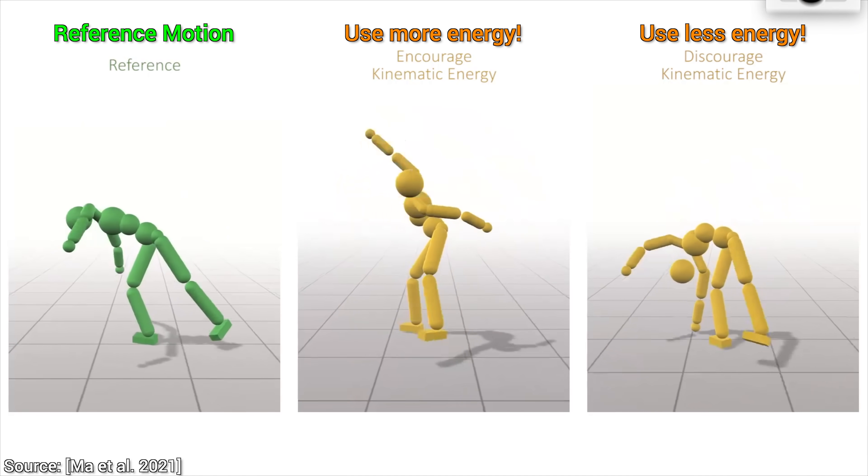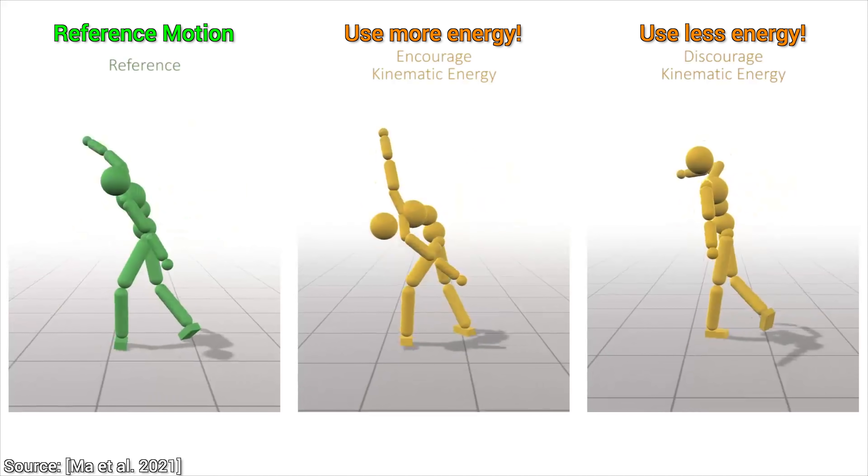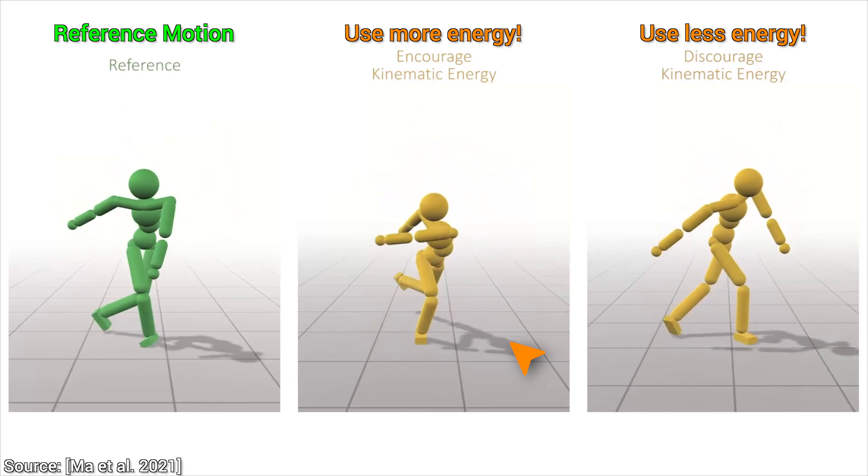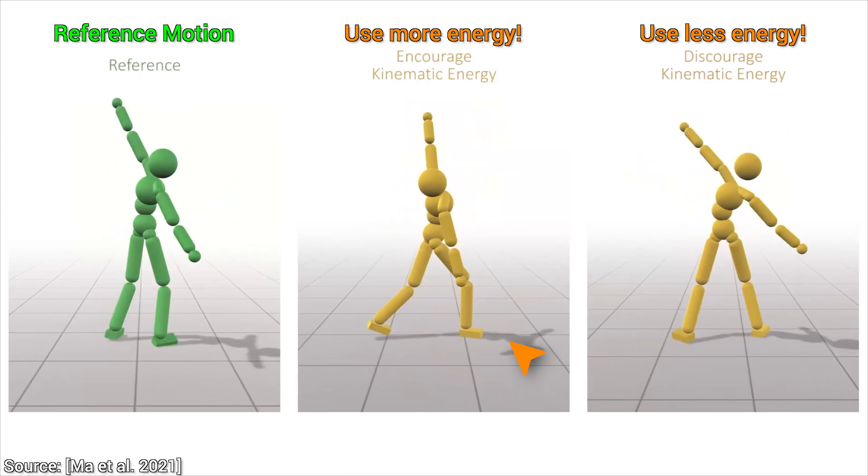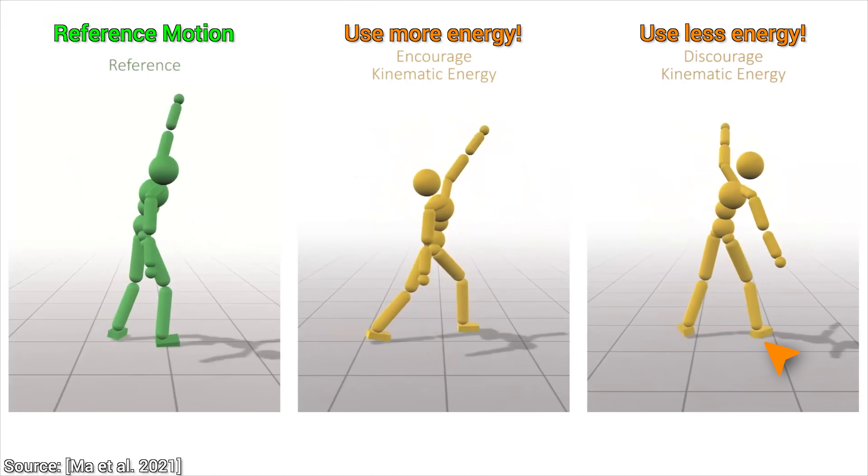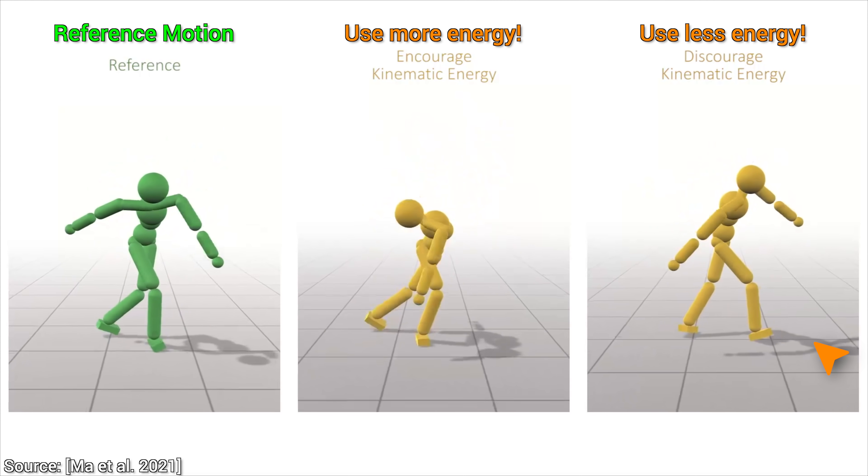With these novel space-time bounds, we can specify additional stylistic choices to the character moves. For instance, we can encourage the character to use more energy for a more intense dancing sequence, or we can make it sleepier by asking it to decrease its energy use.